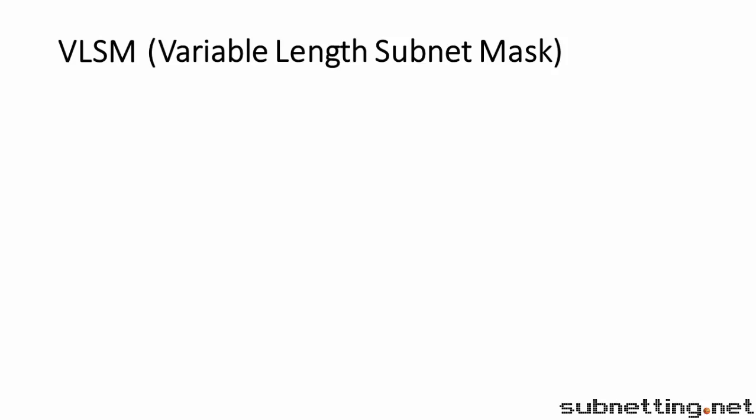VLSM stands for Variable Length Subnet Mask. That's just a fancy way of saying we can divide a single subnet into multiple smaller subnets with different subnet masks. Let's start with an example that doesn't use VLSM, and then afterwards we'll show you an example that does.